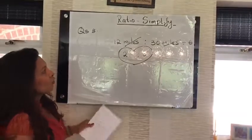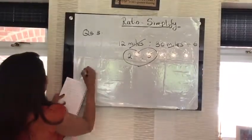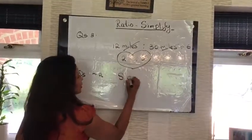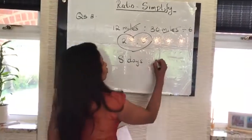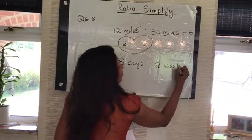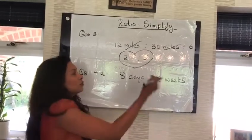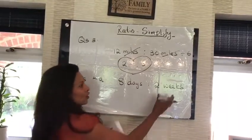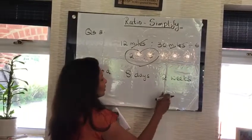But it gets harder in question number 4. Because the measurements are not the same like miles and miles. For an example, question 4a. I've got 8 days to 2 weeks. Now, in this one, you just have to make sure you change the measurement to the smallest one. Days are smaller than weeks. So, I need to find out how many days do I have in these 2 weeks.